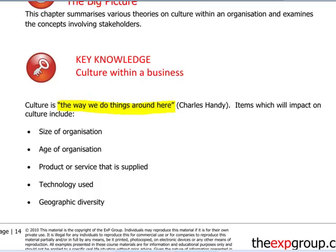Things that will impact on culture in real life include the size of the organisation and the age of the organisation. Generally, the bigger and older the organisation, the more formal the culture will be. The product or service supplied also matters — for example, a software company is likely to have a culture of discovery, of new things, of generating ideas. Technology used and geographic diversity also bring in issues such as the cultures of countries and regions, which will impact on the culture.